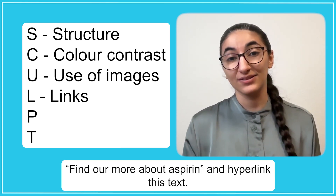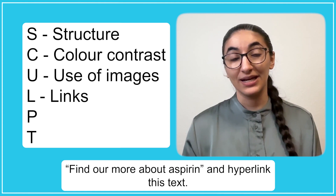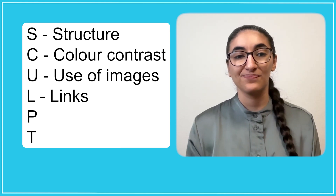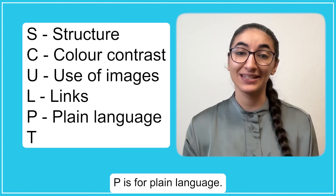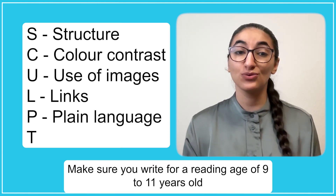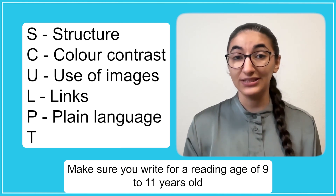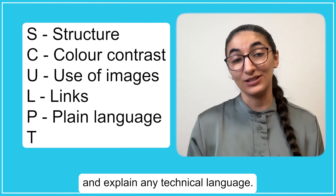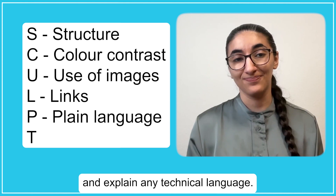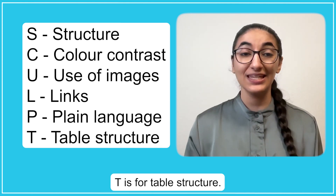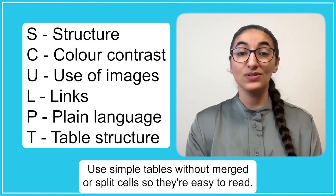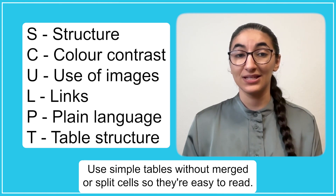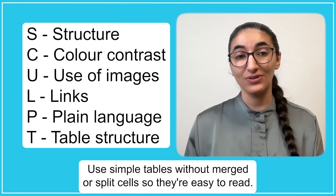So you would write 'find out more about aspirin' and hyperlink this text. P is for plain language. Make sure you write for a reading age of 9 to 11 years old and explain any technical language. T is for table structure. Use simple tables without merged or split cells, so they're easy to read.